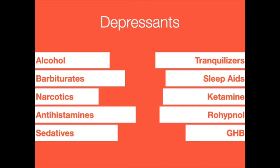Depressants are substances that affect the central nervous system by decreasing physical and mental activity, and are commonly used for medical purposes. All depressants alter consciousness to some degree — they relieve anxiety, promote sleep, depress respiration, relieve pain, relax muscles, and impair coordination and judgment. Common depressants are barbiturates, benzodiazepines such as Valium or Xanax, narcotics, and alcohol. Most are ingested or injected. Street names include downers, barbs, goofballs, yellow jackets, reds, and ludes.